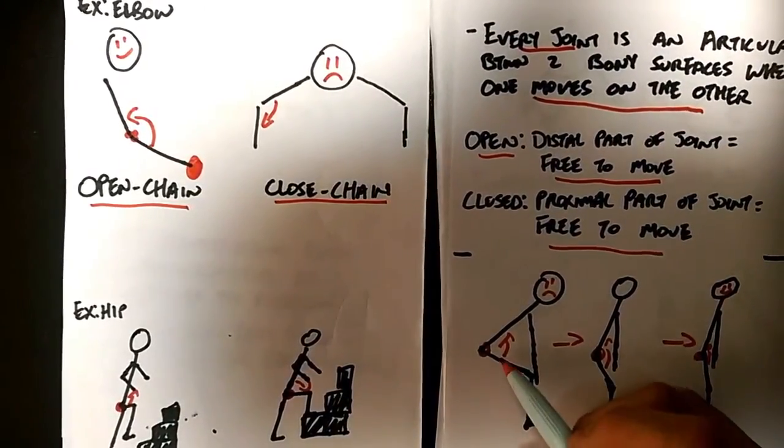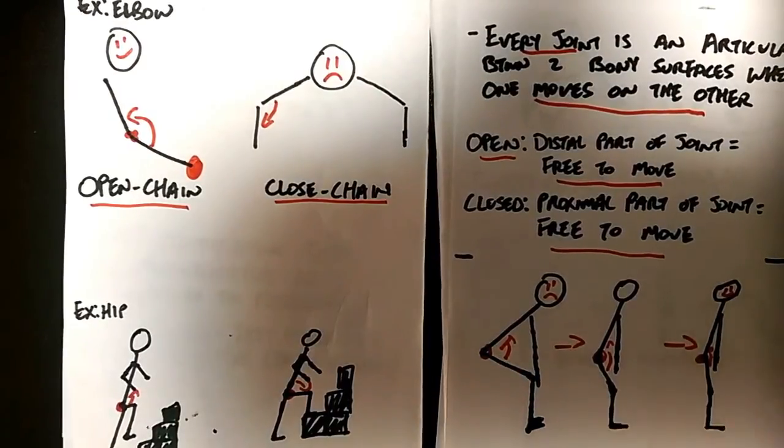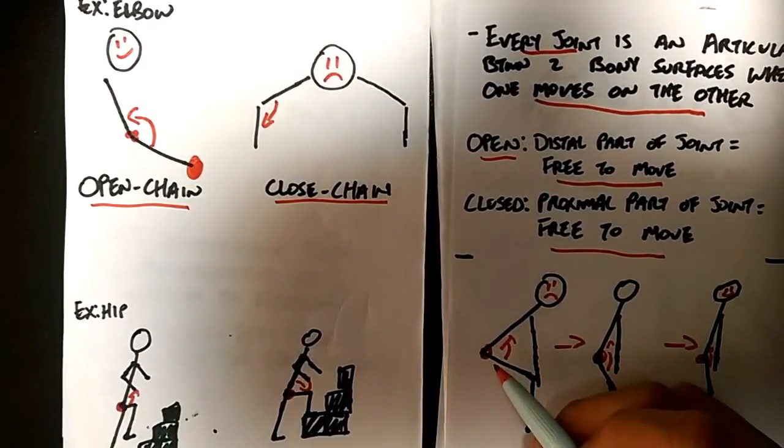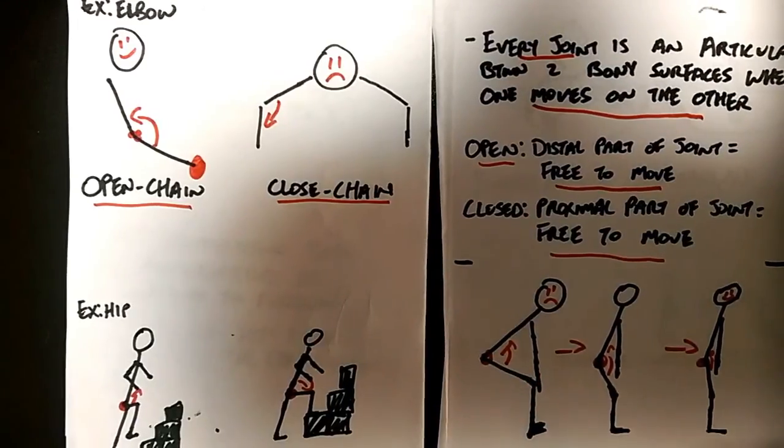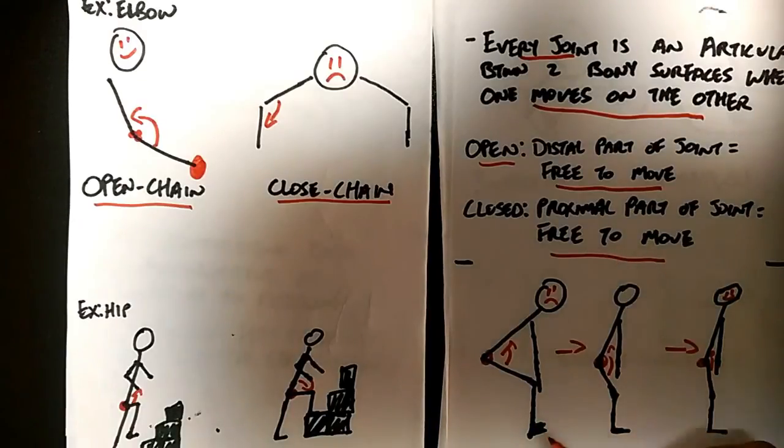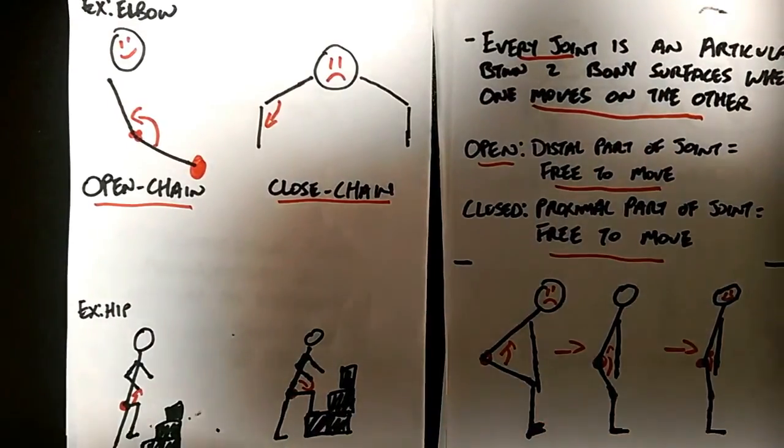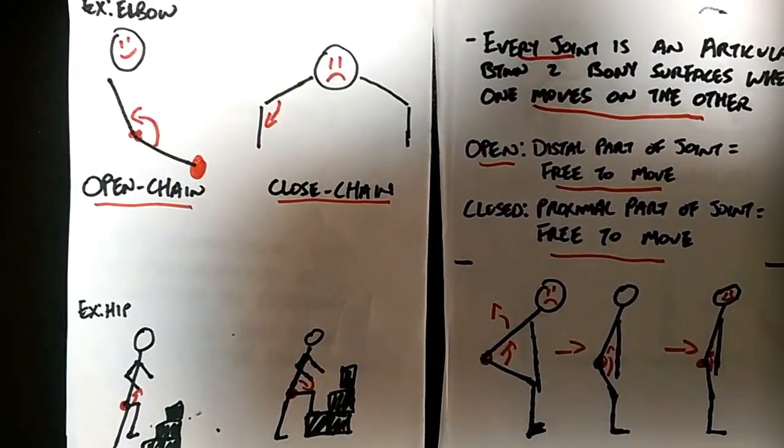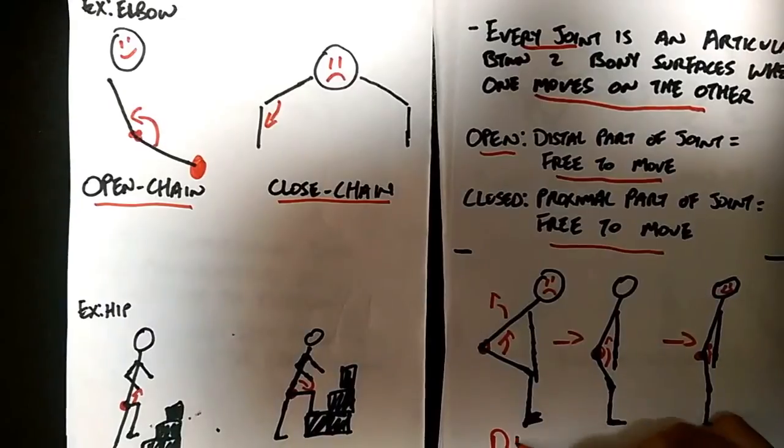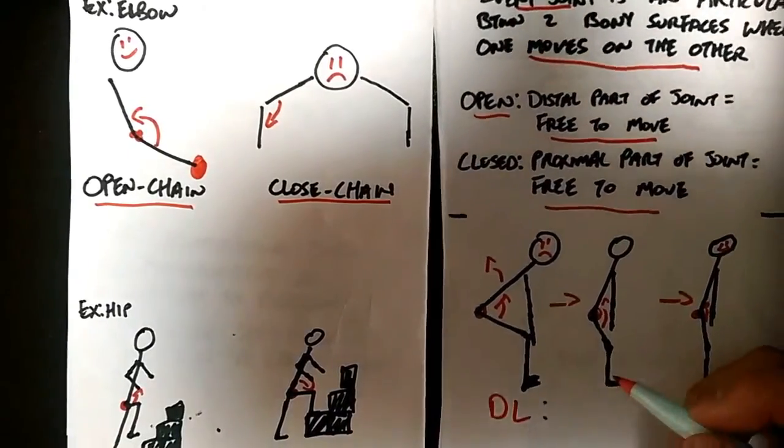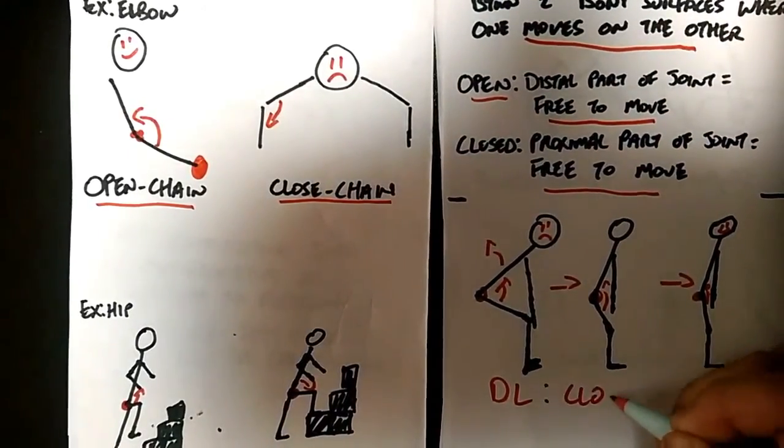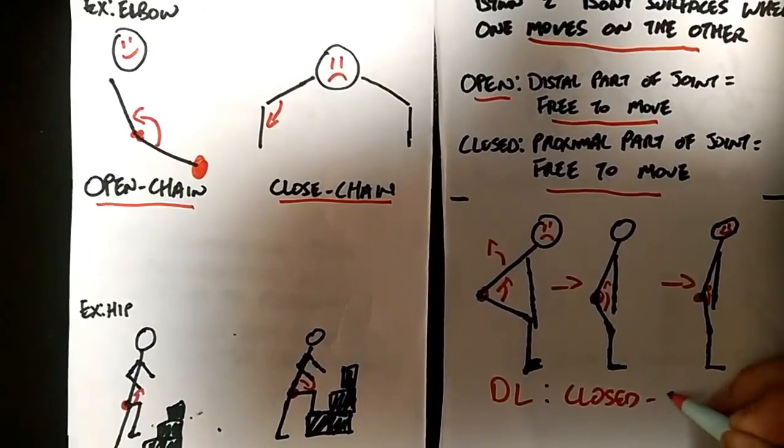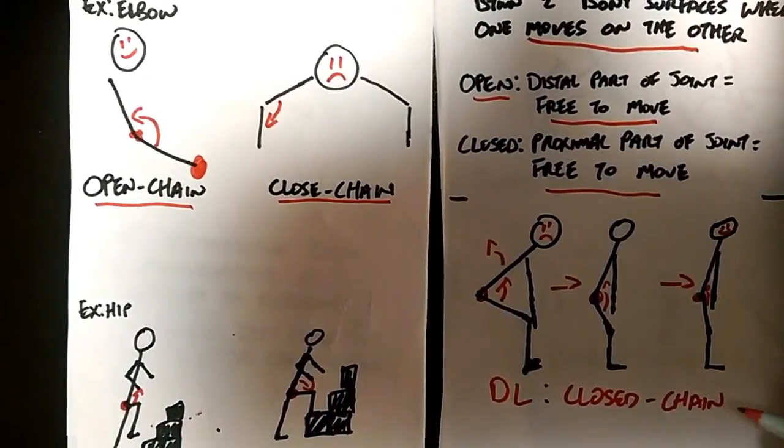It's kind of hard to conceptualize if you've never thought of this before, but my leg, when it's kicking a ball, can be moving towards the pelvis, but because it's in contact with the ground in this case, it's the pelvis that's moving up towards the femur and opening that hip angle. So deadlifts are closed chain movements.